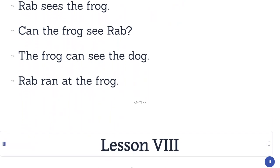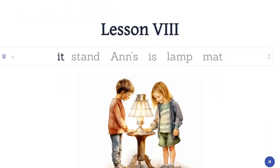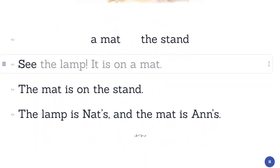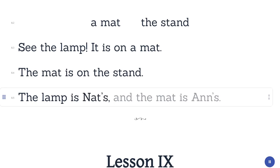Lesson 8. It. Stand. Is. Lamp. Mat. A mat, the stand. See the lamp. It is on a mat. The mat is on the stand. The lamp is on the stand and the mat is on the stand.